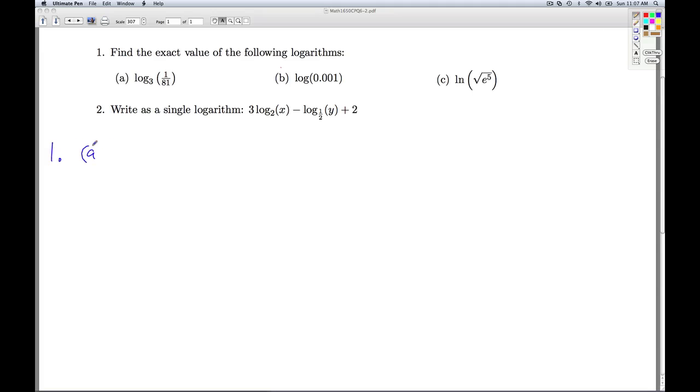So 1a, we have log base 3 of 1 over 81. So this is asking us a question, 3 to what power is 1 over 81? So let's express the right-hand side as a power of 3. Well, 81 is 3 to the fourth power, and I can rewrite that as 3 to the negative fourth power. So by the 1 to 1 property of exponential functions, what I'm after is negative 4.